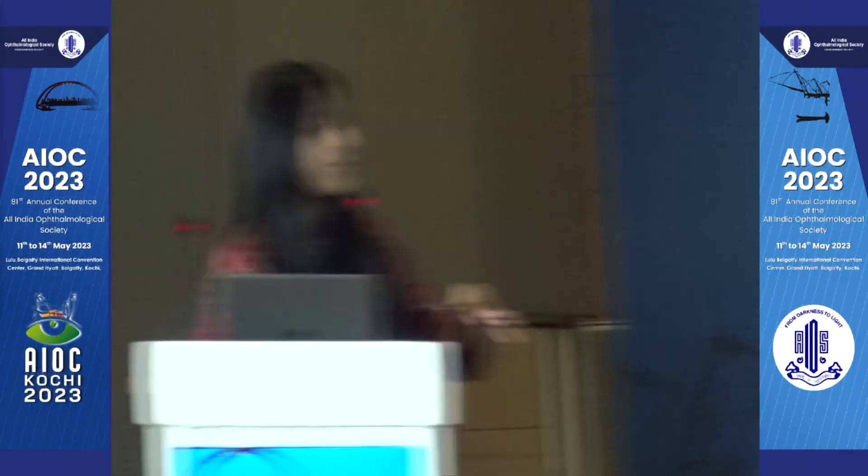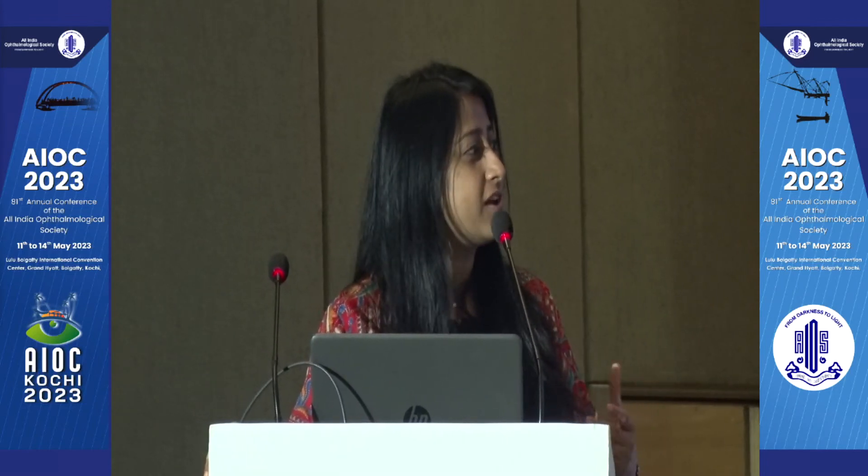It would be good to see artificial intelligence helping us especially in biometry, because biometry is a very important part of cataract strategy and most errors creep in there. I feel that AI assessment is going to be more precise in biometry than human assessment, as there are more chances of errors in human assessment. By just looking at the A-scan, AI should be able to tell us whether the A-scan has been done properly or needs to be repeated.